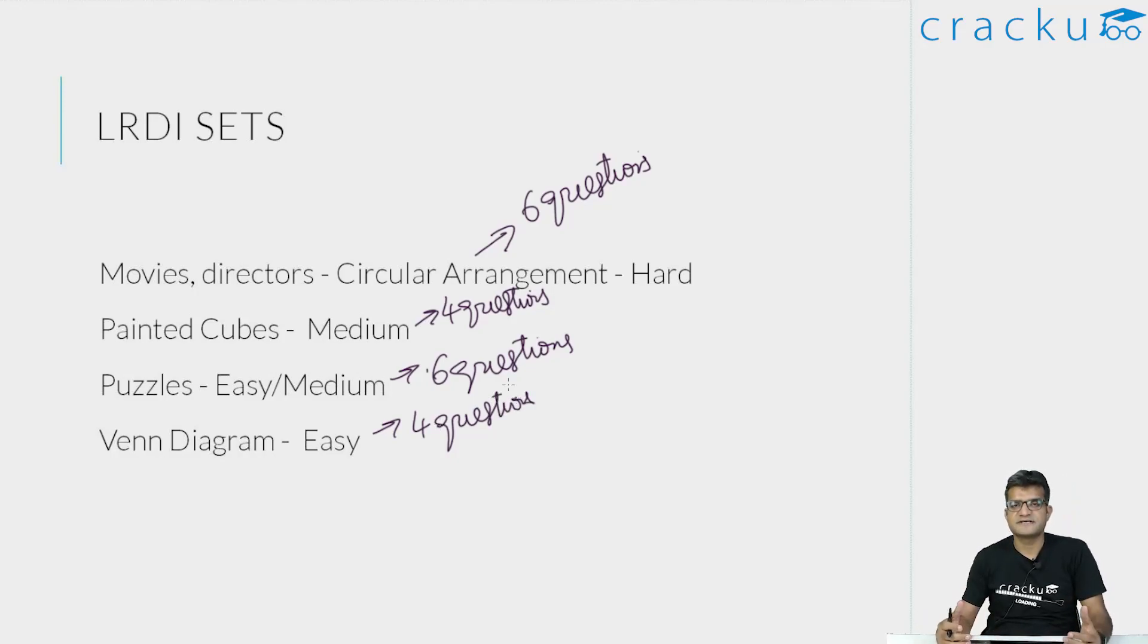Normally when I start the LRDI section, what I do is I spend a minute or so in analyzing and trying to understand what the set is about. I go through all the four sets briefly, and then I make a priority order about which set I will attempt first. My strategy in LRDI is that the first set has to be correct and the first set has to be fast, because then it will remove a lot of stress when I am actually attempting the remaining sets. In this section, when I looked at the four sets, I knew that the Venn diagram set was easy.